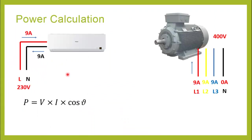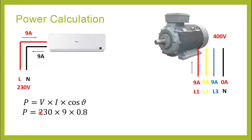Now let's come to the very important concept of power calculation. I'll take the example of a single-phase split AC and a three-phase electric motor — both drawing 9 amperes. In single-phase supply, one conductor supplies the current and the other returns it, so the same current also returns through the neutral. For single-phase power: with 230 volts, 9 amps, and a power factor of 0.8, the total single-phase power comes out to be 1,656 watts.